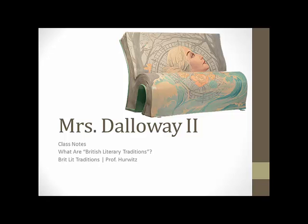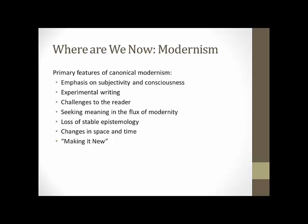It's a really neat piece of art. So first I want to talk about where we're at right now in terms of British literary history and then look back and think about the arc of the course. In thinking about modernism — something you read about for last week — I just wanted to reiterate some of those primary features of what we think of as canonical modernism, associated with writers like Virginia Woolf and also Joseph Conrad, T.S. Eliot, and James Joyce.